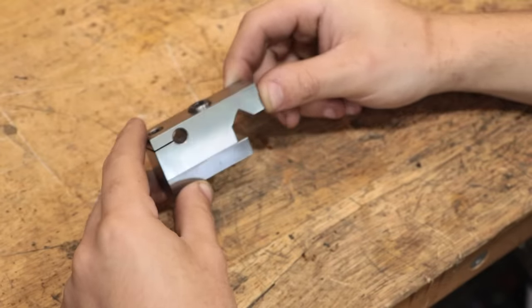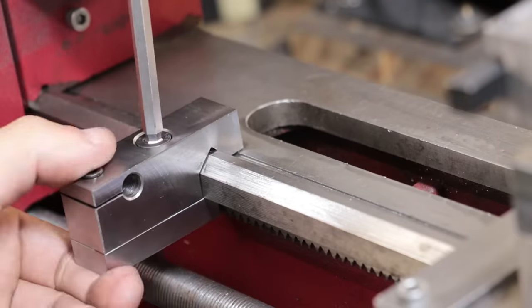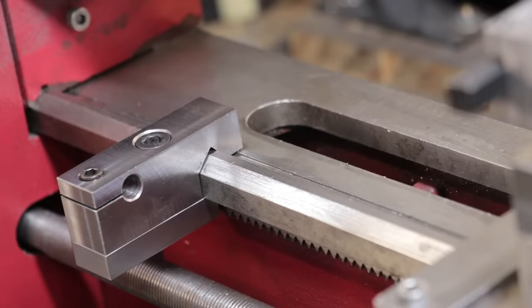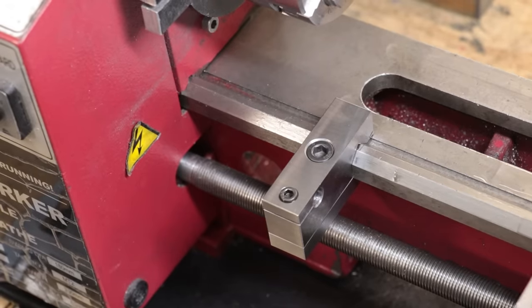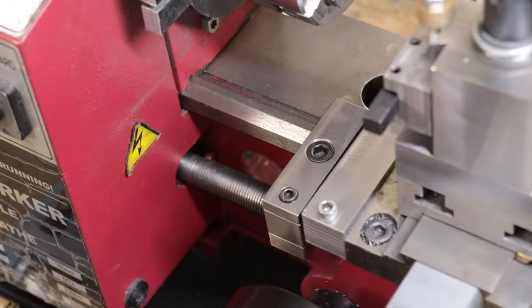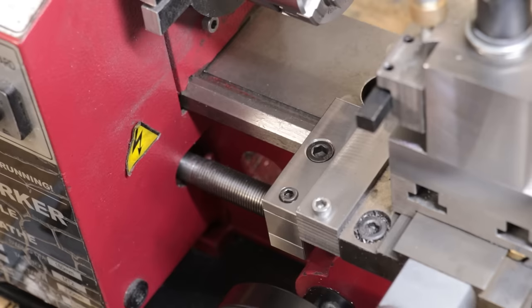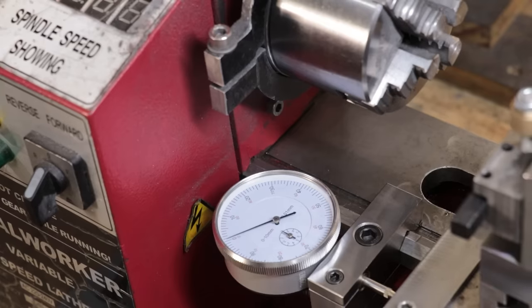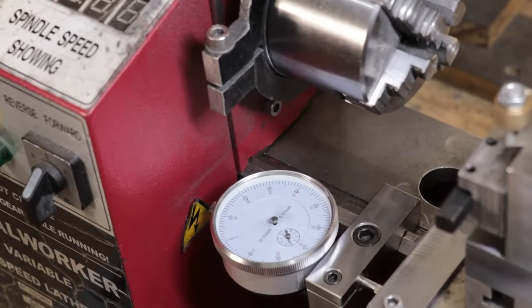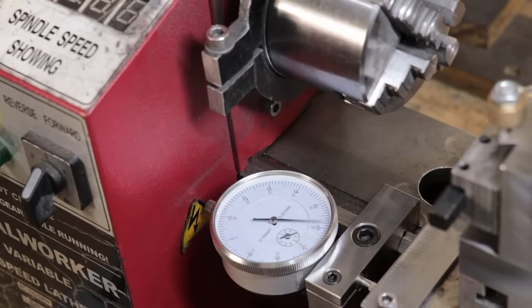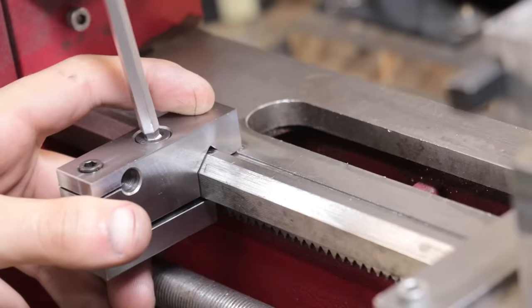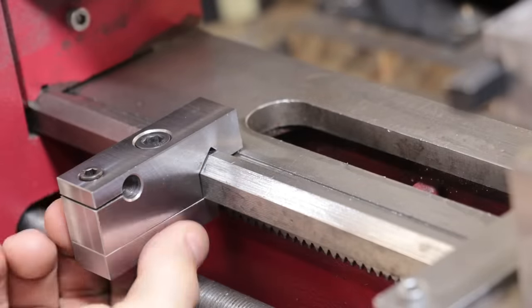The final thing I would recommend that you make is a carriage stop. It's simply a block that clamps onto the ways of your lathe and will act as a physical stop. It physically stops the carriage from moving, either travelling too far and scrapping apart, or crashing the lathe, possibly into the chuck. On some really tight tolerance parts, having something like this is actually pretty necessary. It also allows you to secure an indicator and take some pretty accurate readings using the indicator.